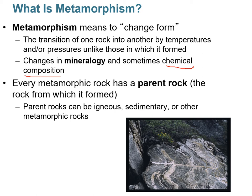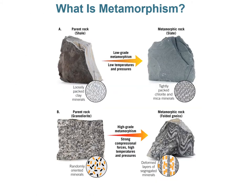Here are some examples of metamorphism. The parent rock here is shale, a detrital sedimentary rock. Under low-grade metamorphism — low temperatures and pressures — it metamorphoses into slate. You can see little clay minerals sub-parallel to each other, barely visible to the naked eye. In the slate, those clay minerals transform into chlorite and mica, and they all line up parallel because of the increased pressure.